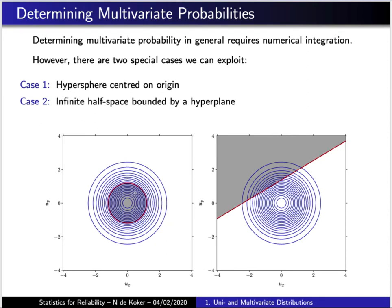The other case is an infinite half space bounded by some linear hyperplane. So again, in two dimensions, what that amounts to is the probability of a point falling on the one side of a straight line.